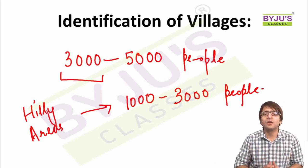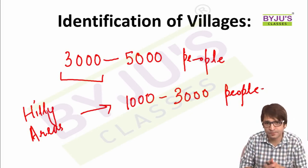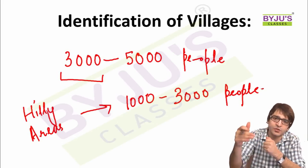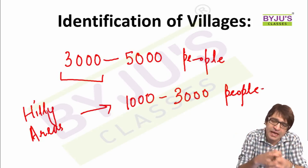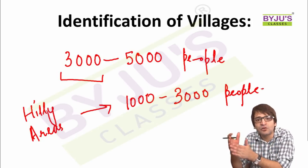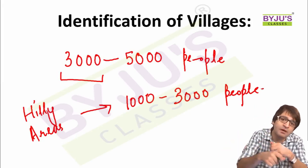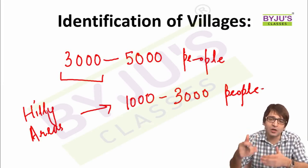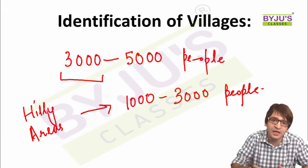If an MP belongs to an urban constituency with no villages — for example, a Mumbai Lok Sabha constituency designated as urban — they can adopt a village in a neighboring rural constituency. This is what the eight MPs in Mumbai have done: they have adopted rural villages in neighboring rural constituencies.